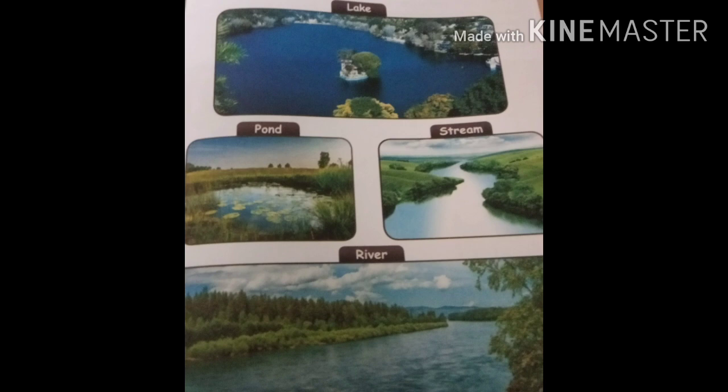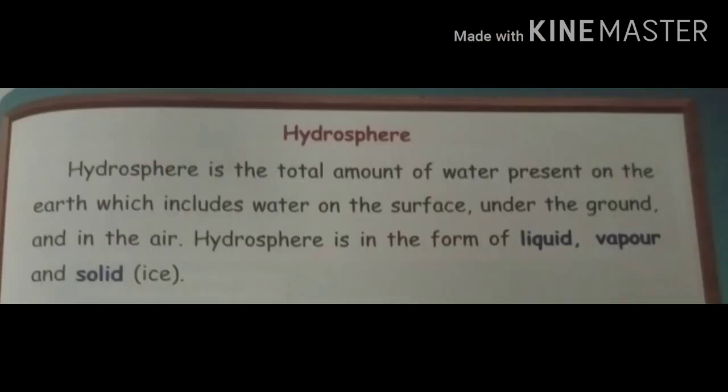Children, what is hydrosphere? The water from oceans, seas and other water bodies are called hydrosphere. Rani asked: Can you tell me more about hydrosphere, Sundar? Come children, we will learn about hydrosphere. Hydrosphere is the total amount of water present on the earth, which includes water on the surface, under the ground, and in the air. What is hydrosphere? It is the total amount of water present on the earth.